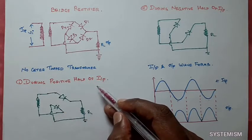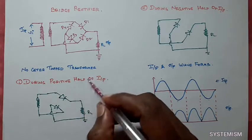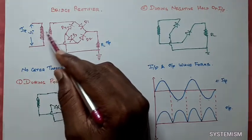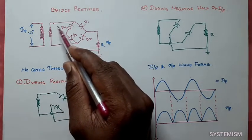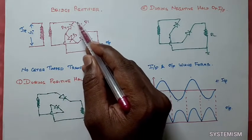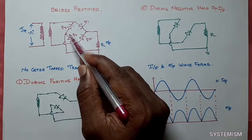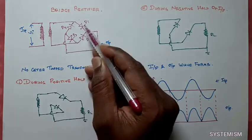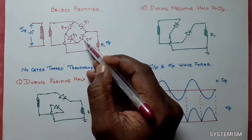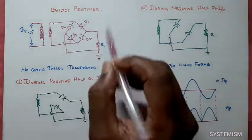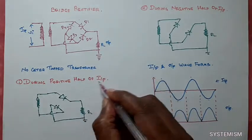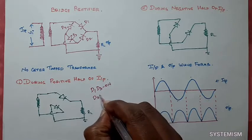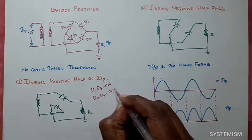During positive half cycle, positive signals are coming in this transformer, so positive values come — here positive value, here positive value. Due to this, diode D1 and D3 will be in ON condition. In the same way, D2 and D4 will be in OFF condition. So during positive half cycle, diode D1 and D3 will be ON and D2 and D4 will be OFF.